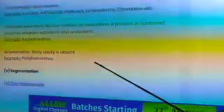Next is acoelomates. Body cavity is absent. Example: platyhelminthes.